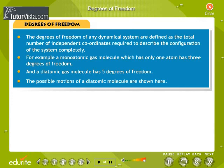Degrees of Freedom: The degrees of freedom of any dynamical system are defined as the total number of independent coordinates required to describe the configuration of the system completely. For example,